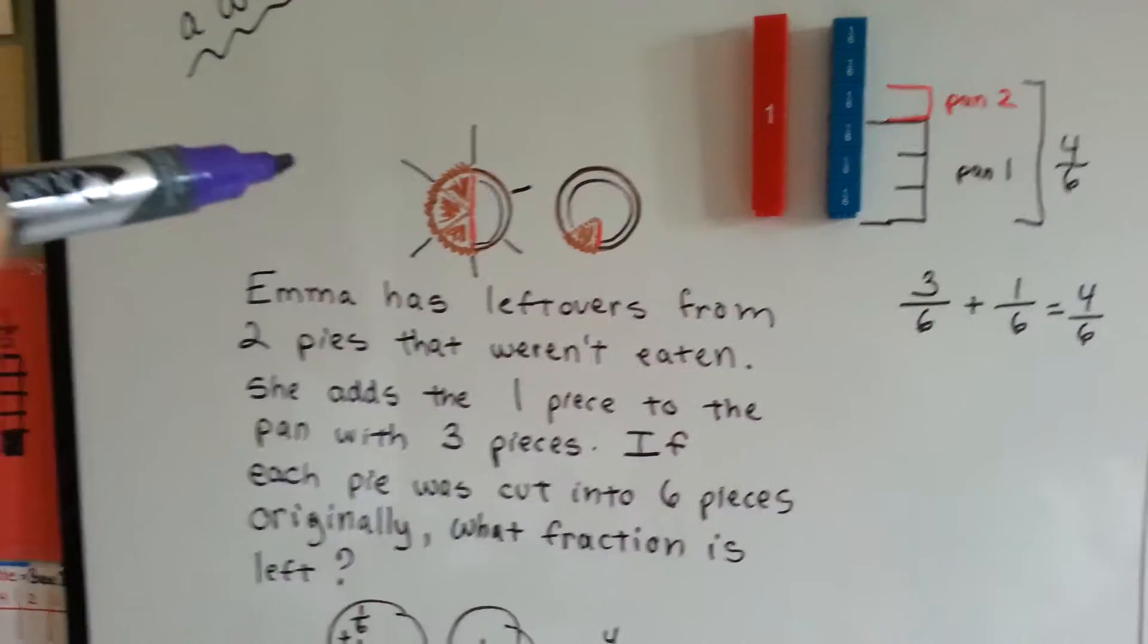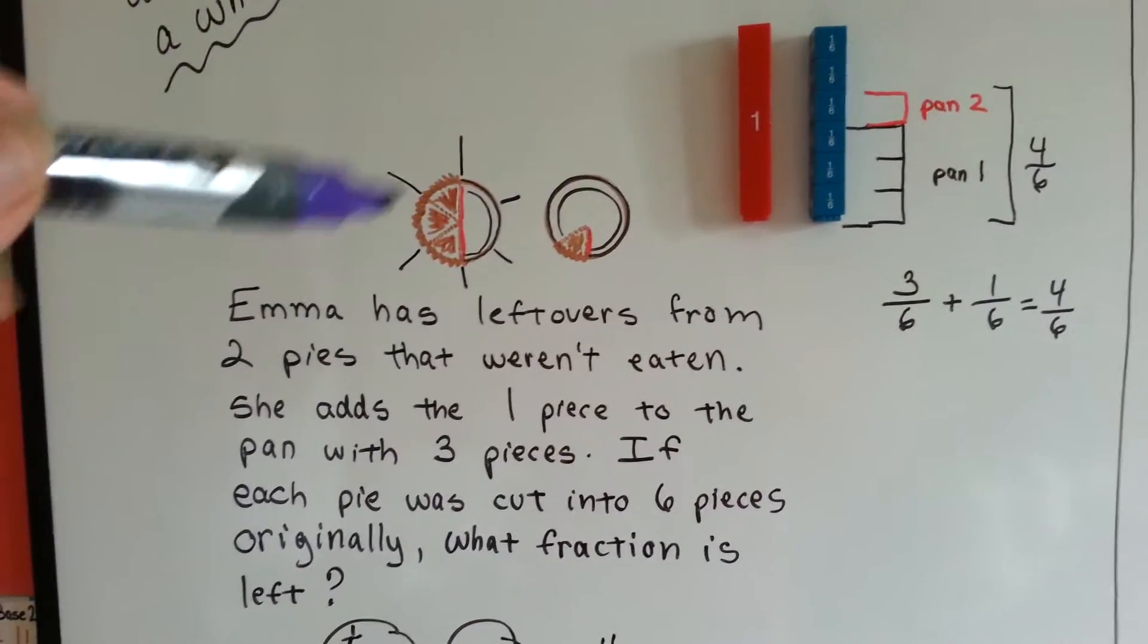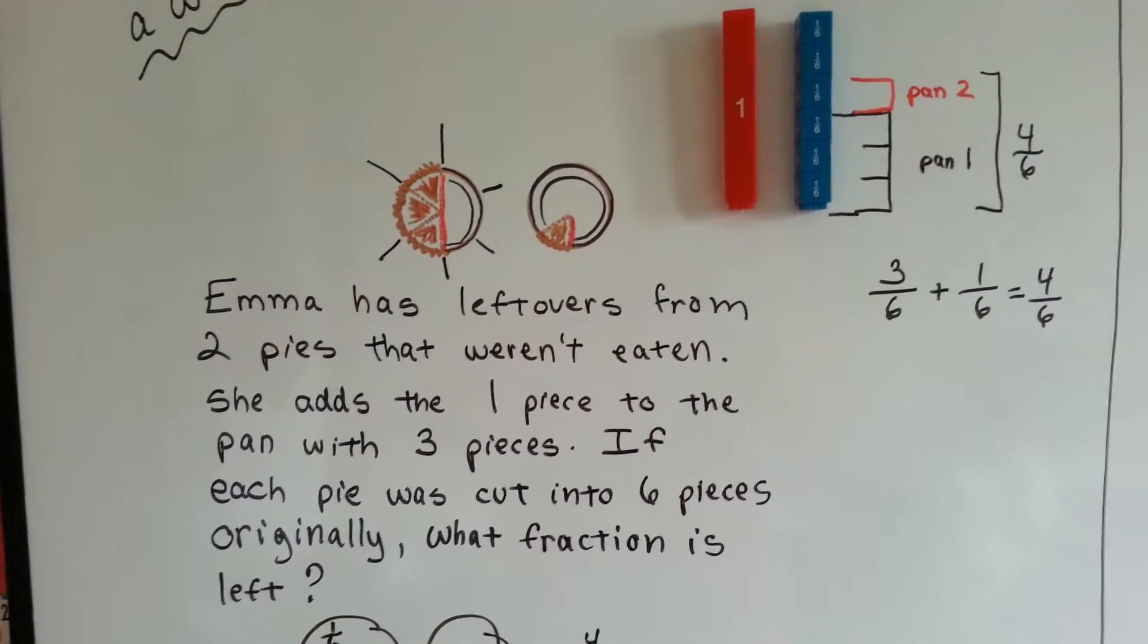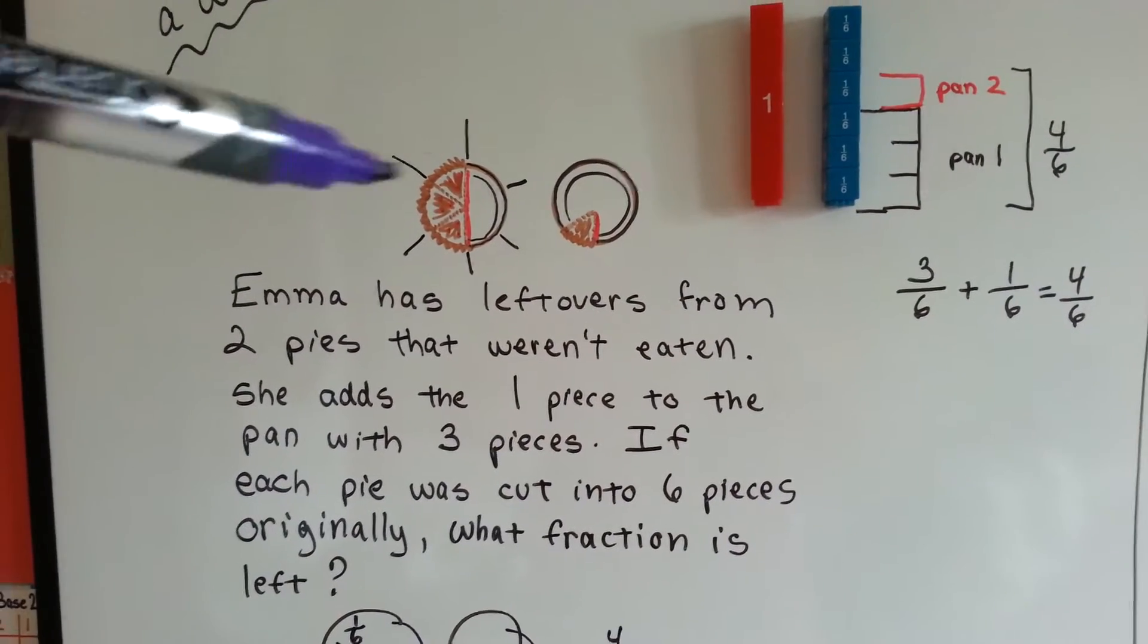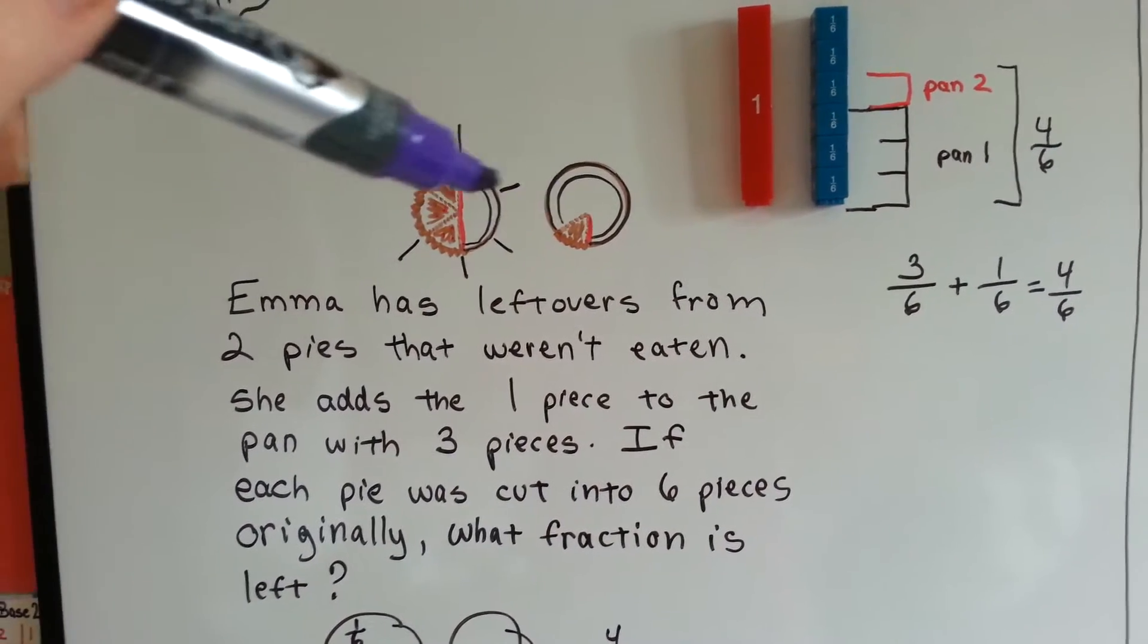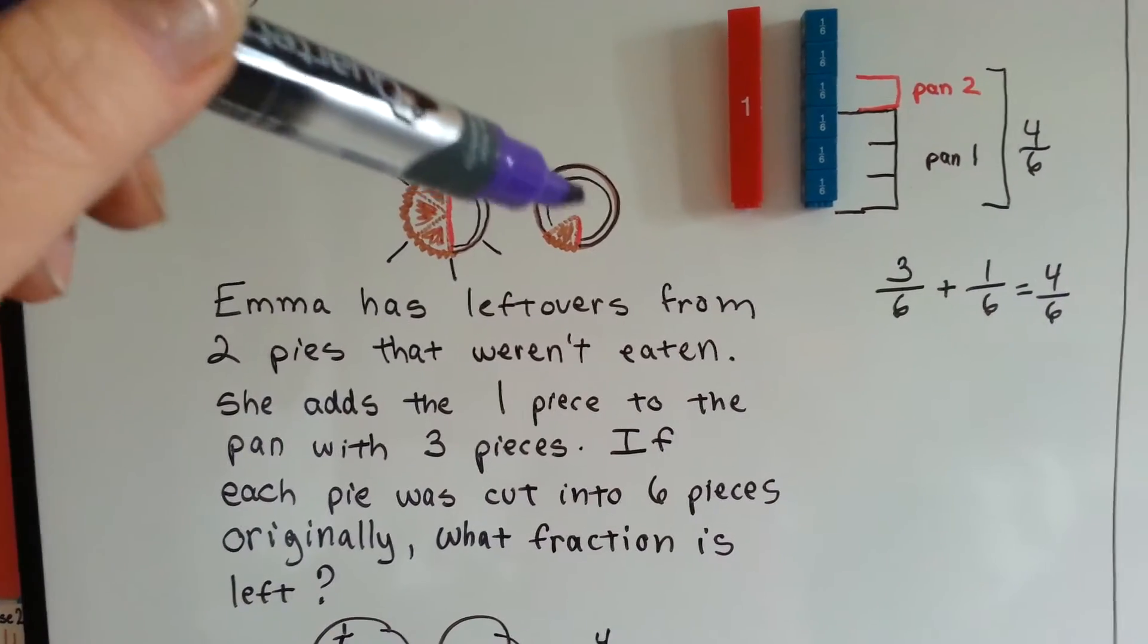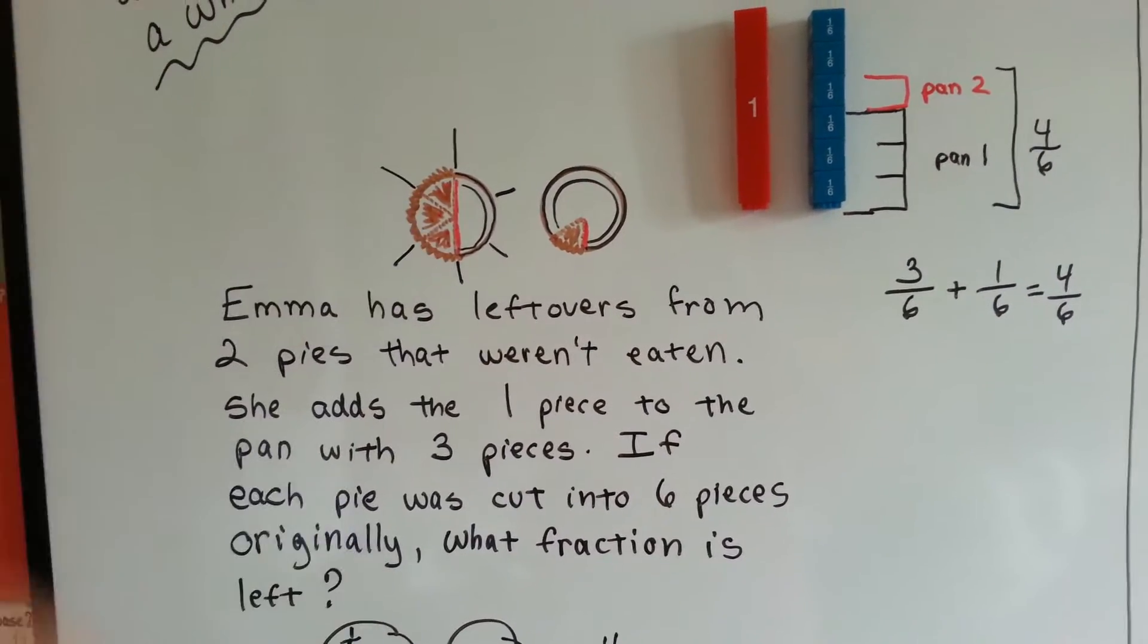She wants to put them away in the refrigerator. And she wants to combine the pans, because she doesn't want to have to wrap two pans. They're both cherry pies. So, if she puts this piece into this pan, then she can put that pan away and just wrap this one up.